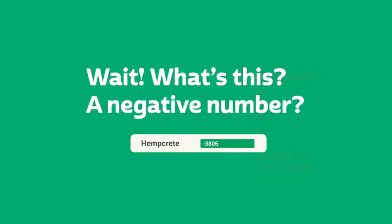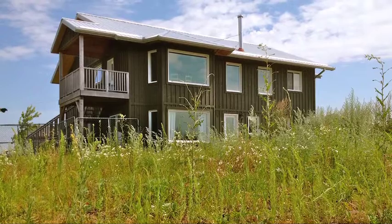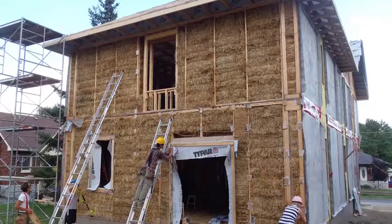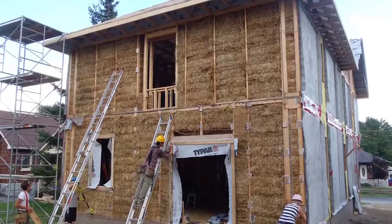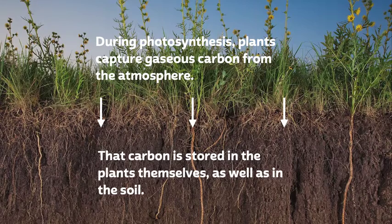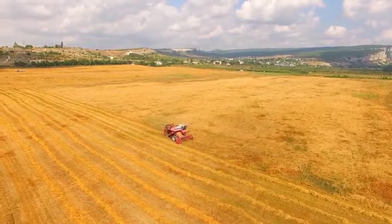How is it possible for a building to store more carbon than it emits? It seems counterintuitive. Carbon-storing buildings use a relatively high proportion of plant-based building materials. During photosynthesis, plants capture gaseous carbon from the atmosphere, and that carbon becomes a high percentage of the plant's mass. When we harvest those plants,